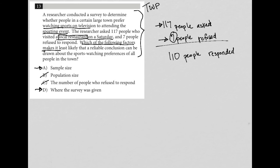And what I'm liking, because it makes it least likely, so anytime I see this term least, that means there's probably two good answers like we have here. Sample size is probably a good answer as well as where the survey was given is a good answer. But which one is the least likely?